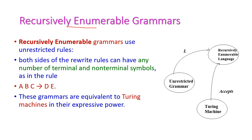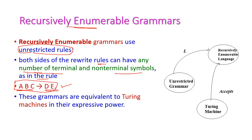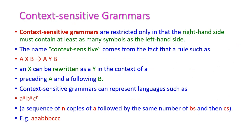Recursively enumerable grammar uses unrestricted rules. That means in the rule, both sides can have any number of terminal and non-terminal symbols. For example, in a rule the left hand side can have three non-terminals and the right hand side two non-terminals — there is no restriction. It is equivalent to a Turing machine in its expressive power. This is called recursively enumerable language — it is unrestricted grammar, meaning both sides may have any number of non-terminal and terminal symbols, and it accepts a Turing machine.